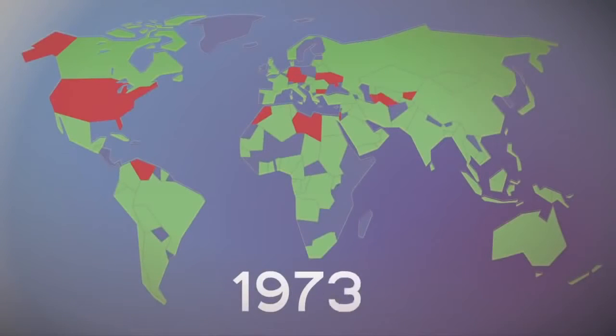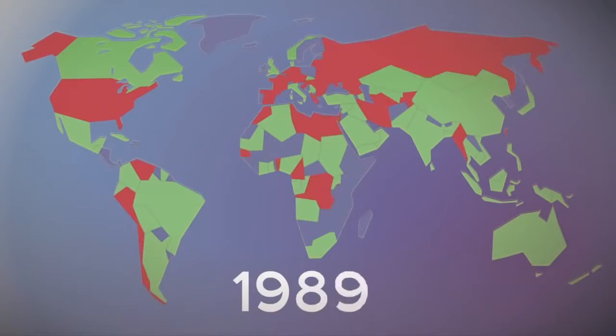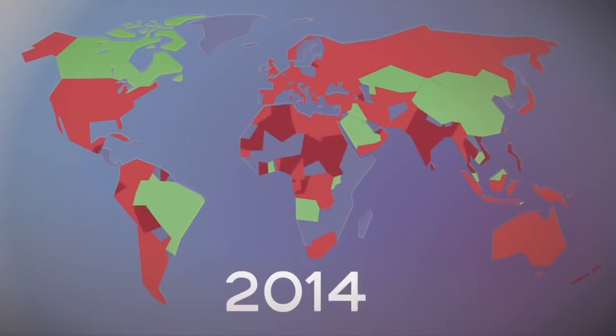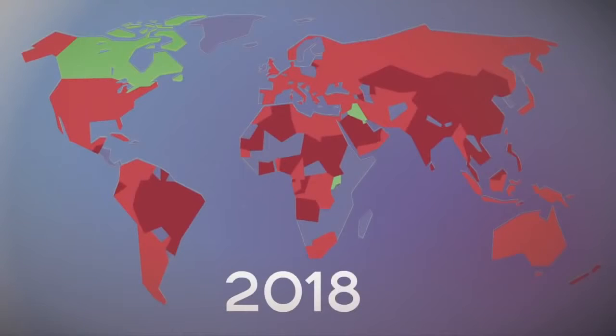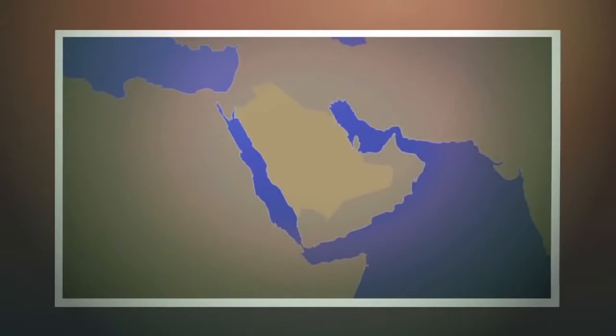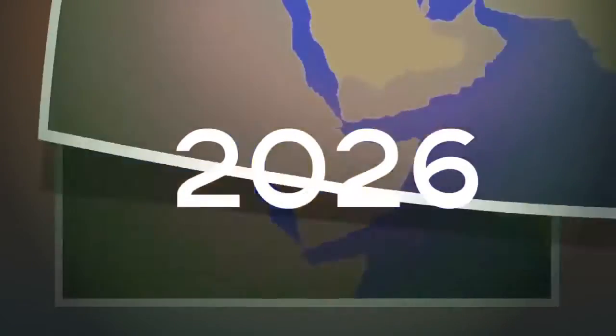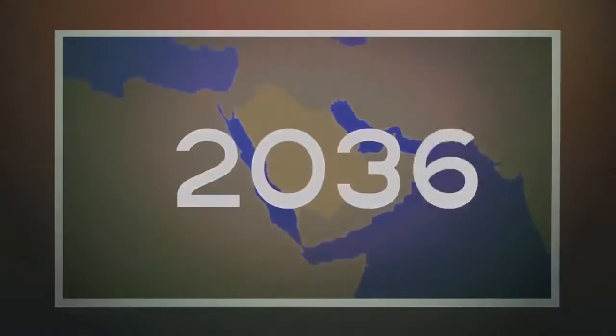54 of the 65 major oil-producing nations have already peaked in production. Many of the others are expected to follow in the near future. The world will need to bring the equivalent of a new Saudi Arabia into production every three years to make up for declining output in existing oil fields.